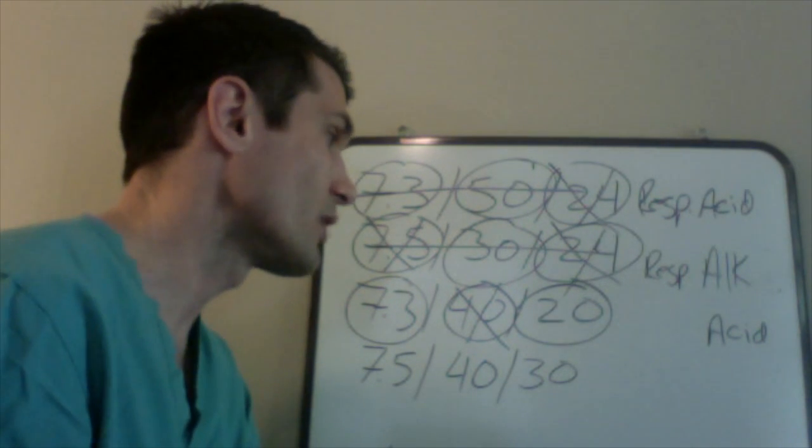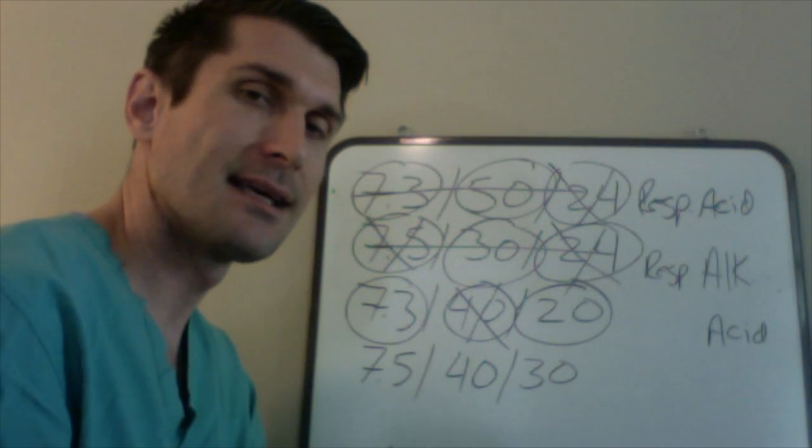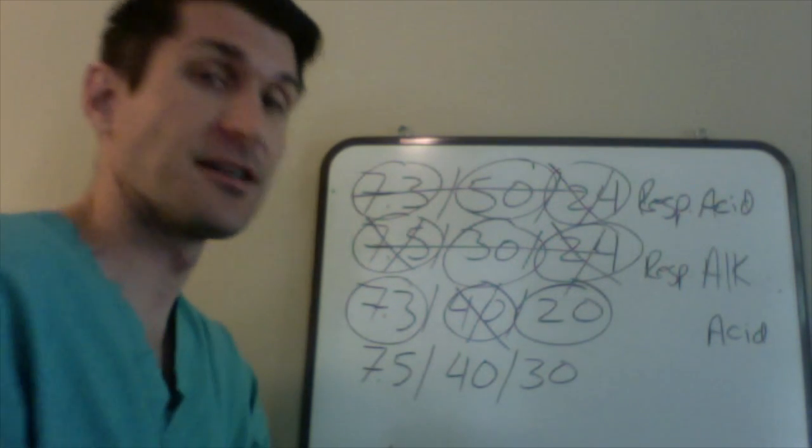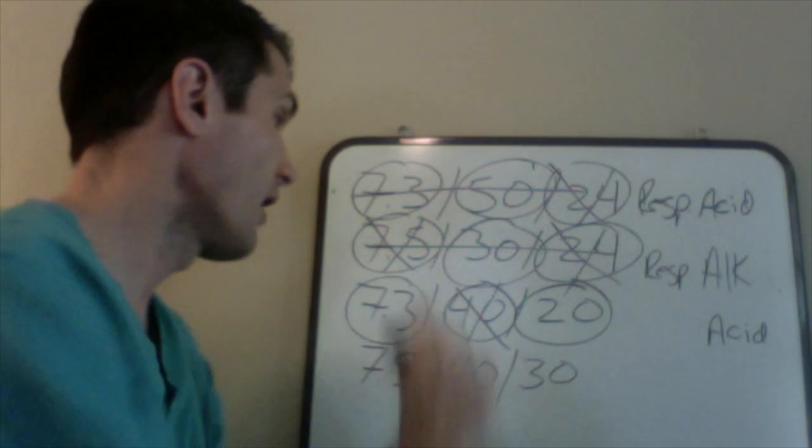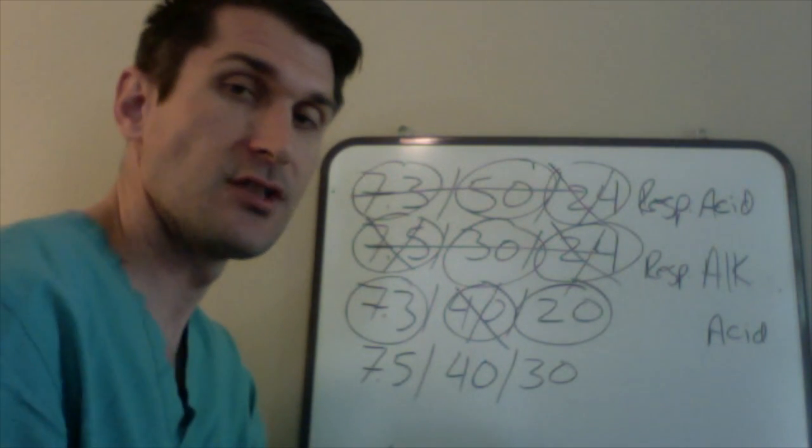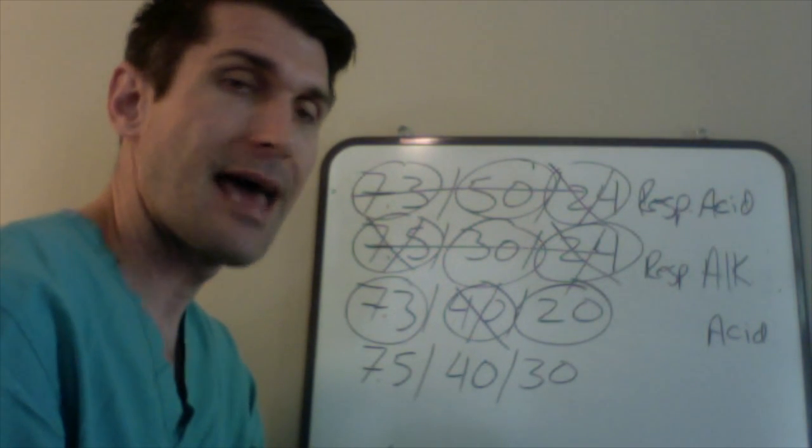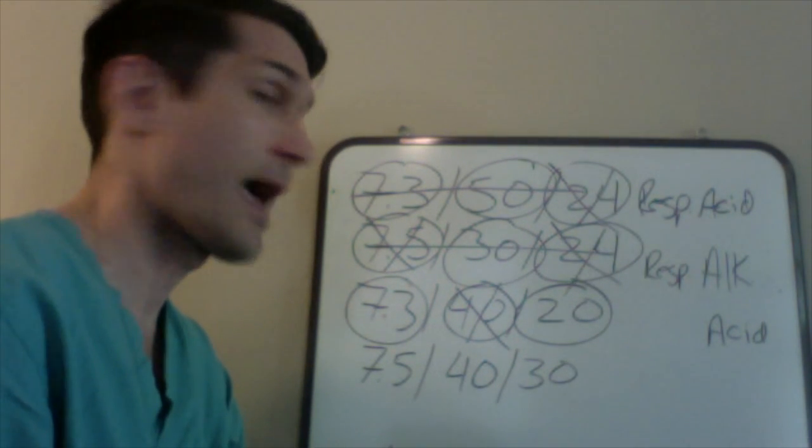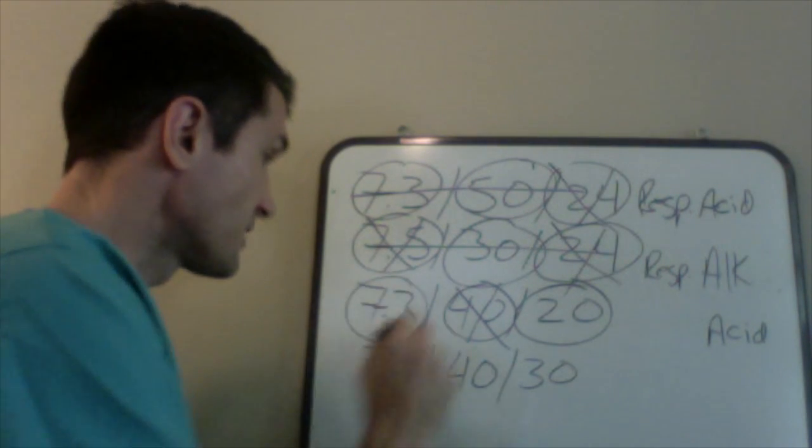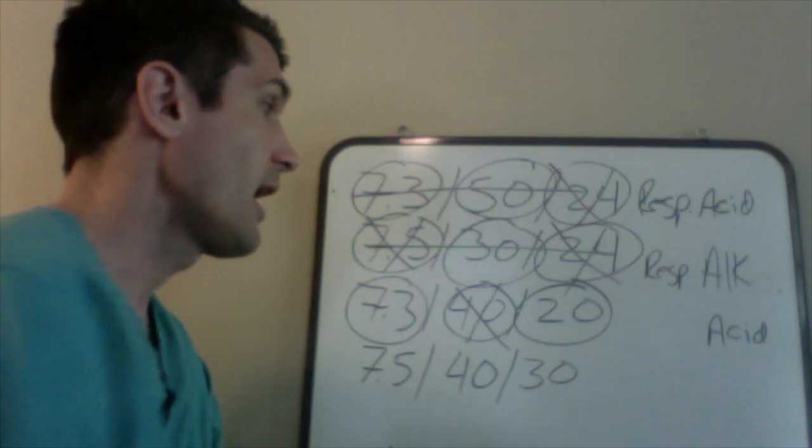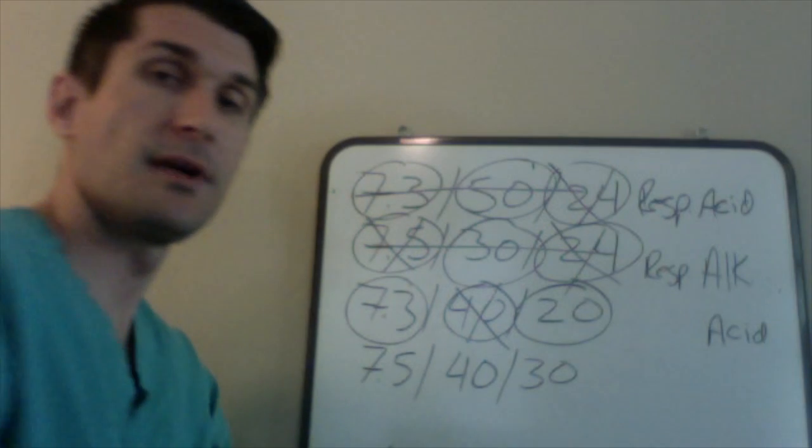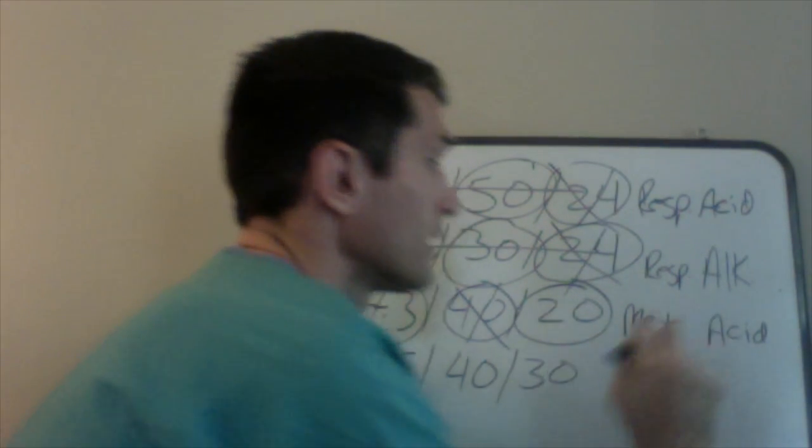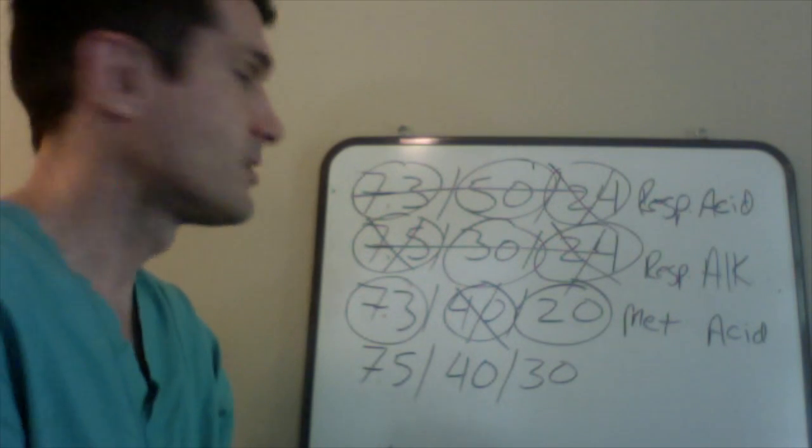So when we're decreased, we have less of a base in the solution, less base equals an acidotic situation. So of these two individuals or these two parameters, which one is behaving acidotically? That is correct, it is the bicarb. So another name for that would be metabolic. So we have an acidotic situation based on the pH and it's a metabolic cause because it's the bicarb, so I'm going to put metabolic acidosis.